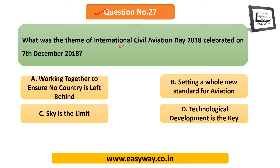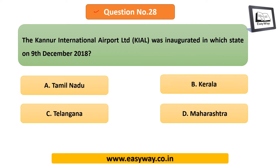Question 27: What was the theme of International Civil Aviation Day celebrated on 7th of December 2018? The date itself is important. The theme is 'Working together to ensure no country is left behind,' relating to connectivity. Question 28: The Kannur International Airport Limited was inaugurated in which state? The answer is Kerala.